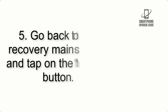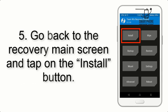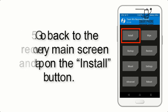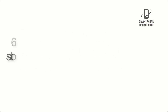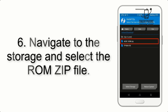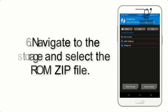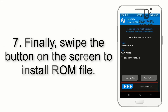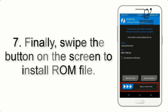Step 5: Go back to the recovery main screen and tap on the Install button. Step 6: Navigate to the storage and select the ROM zip file. Step 7: Finally, swipe the button on the screen to install the ROM.